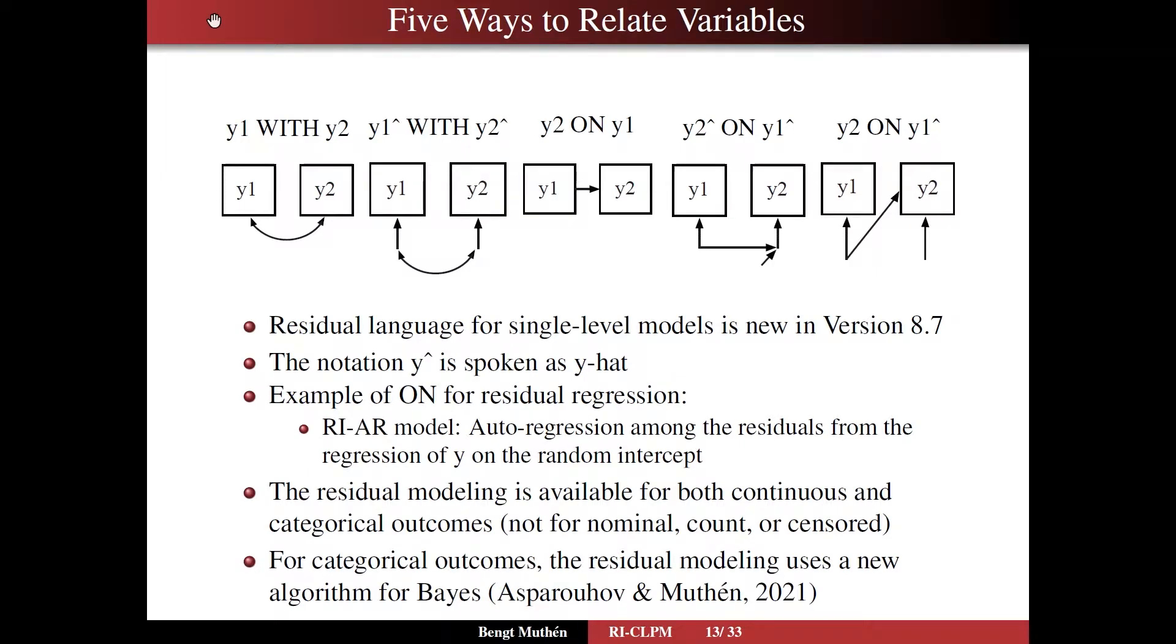Turning to slide 13, we'll take a look at new Mplus language introduced in version 8.7 for single-level, regular single-level modeling. And we're listing here five ways to relate variables, some of which have been available before but nevertheless for completeness. So we have two variables here. We can say that they covary using the with language, y1 with y2.